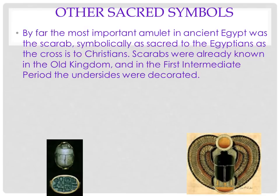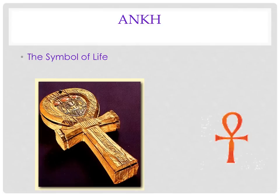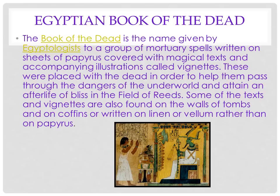Other sacred symbols include the scarab, a very ancient symbol representing the beetle, and the ankh, the symbol of life. The Egyptian Book of the Dead had all these vignettes and illustrations to help you navigate the dangers of the underworld.